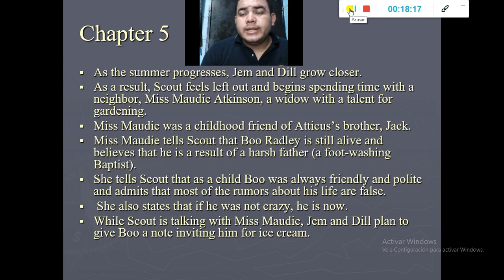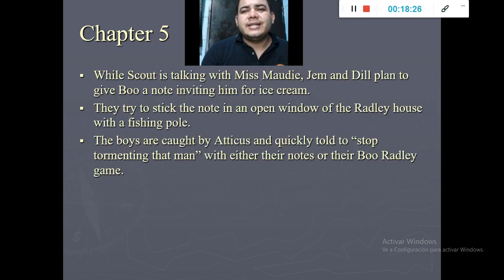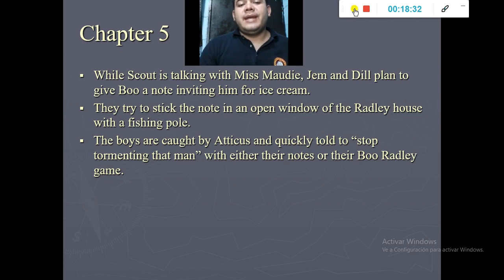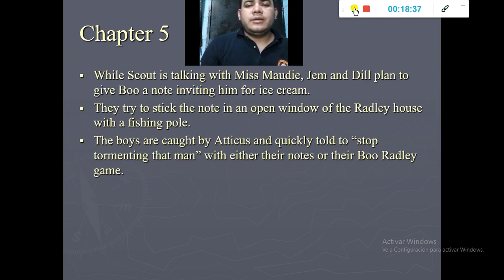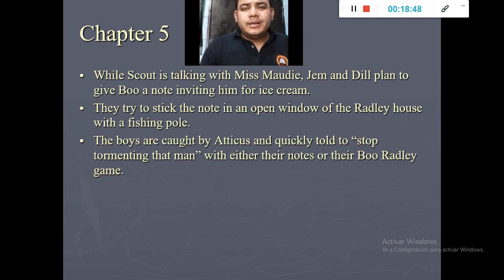By that time, Jem and Dill plan to invite Boo Radley for ice cream and try to send an invitation through his window. Of course, Boo Radley never accepts. Atticus appears and stops them, telling them to stop tormenting the man with their notes and their Boo Radley game.